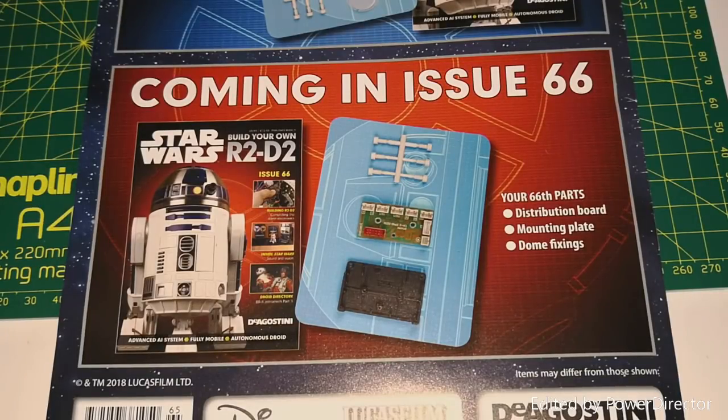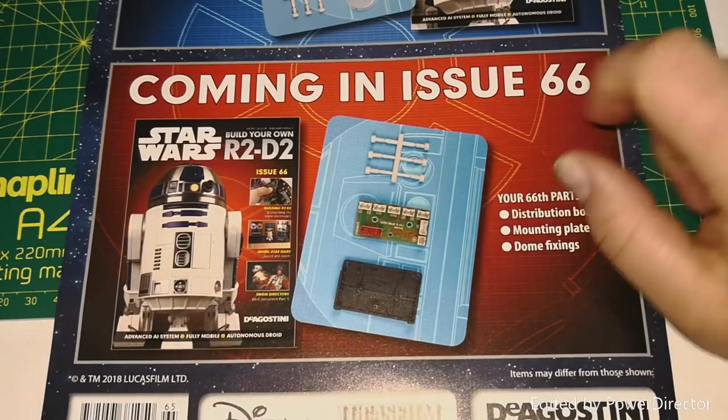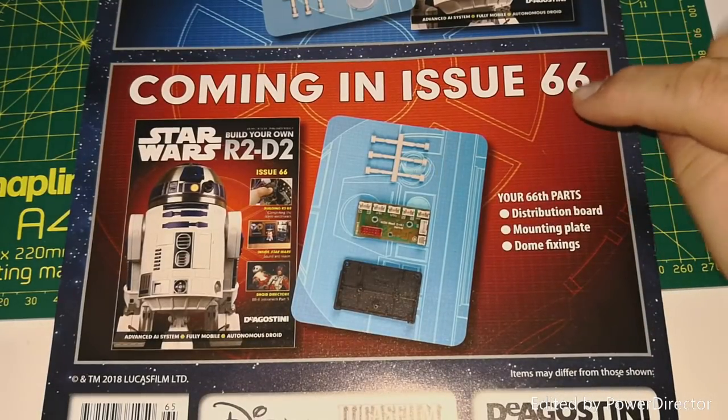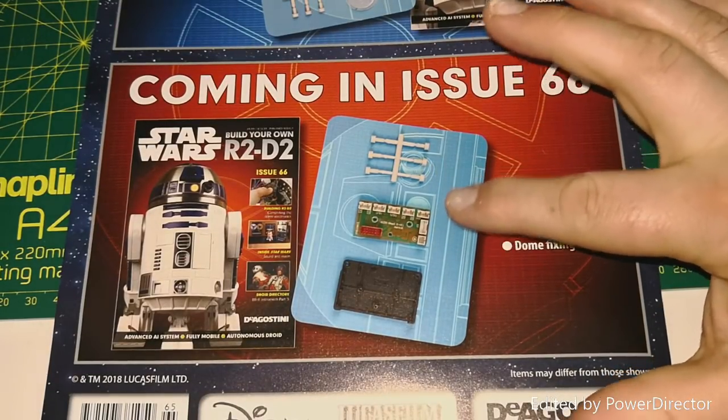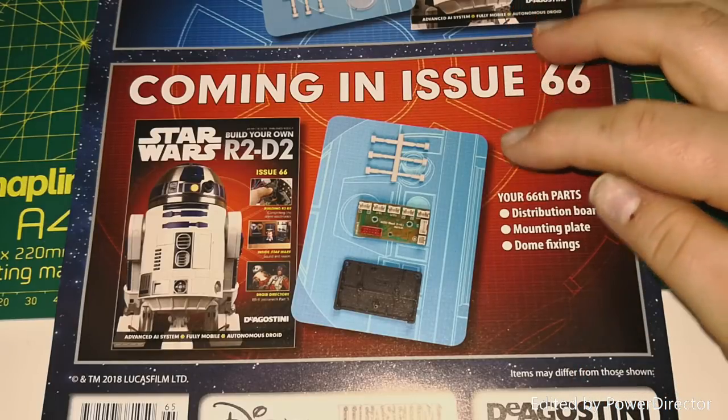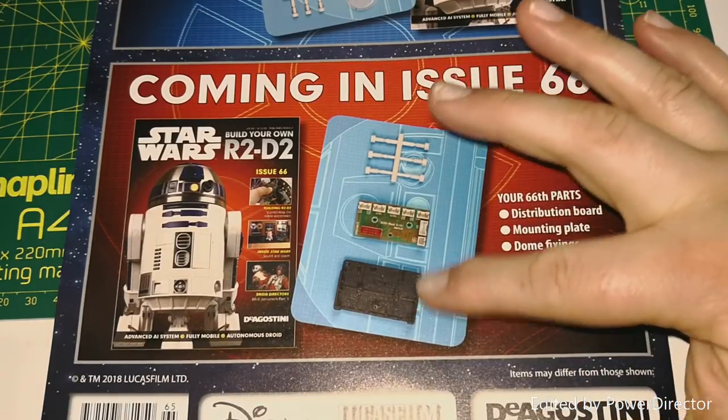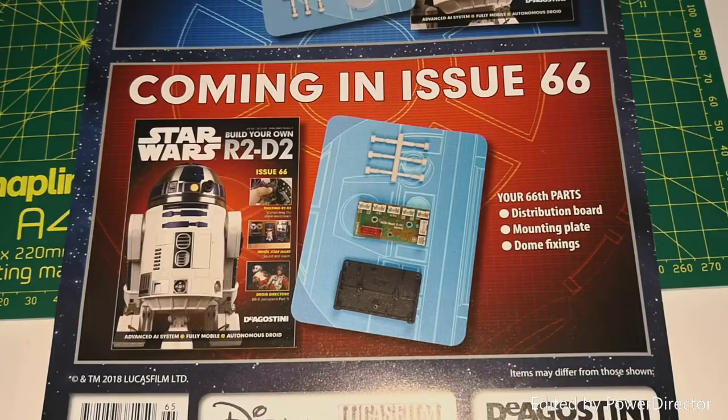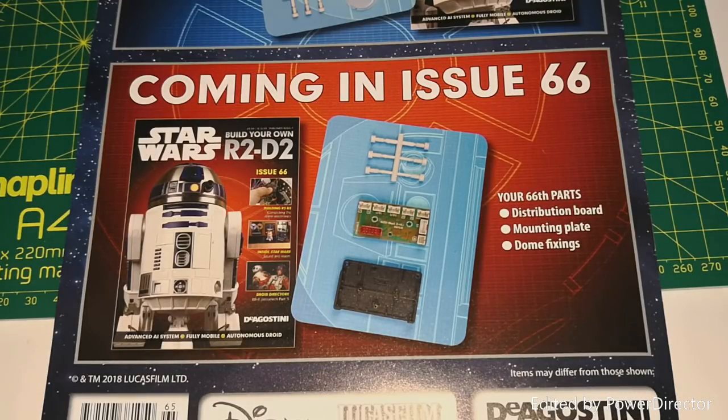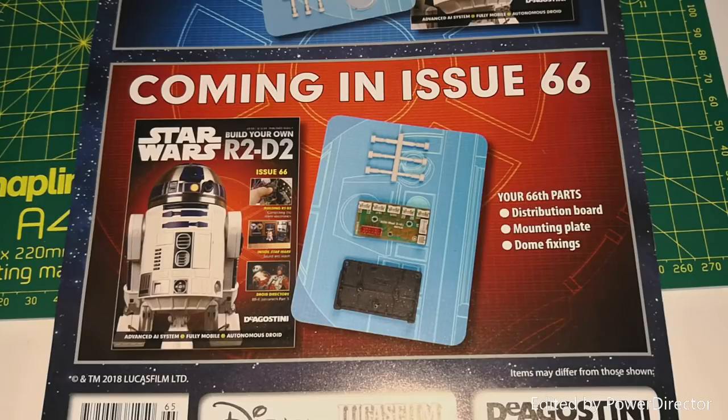Okay, next time it's issue 66 which we'll be doing here at the Geek Den. Some more of the plastic screws here. Then we have the distribution board. This will probably be the plastic covering, plastic fixture for that. I do believe as well we get to fit the projector in next time. So it's coming along really nicely and hopefully we'll see you at the next video.